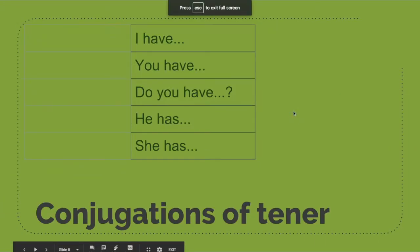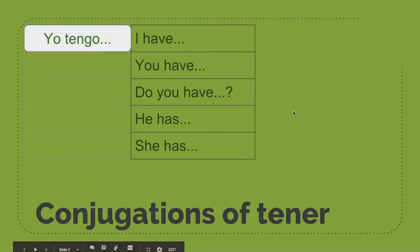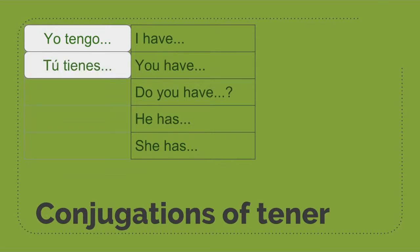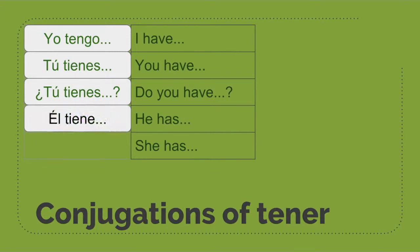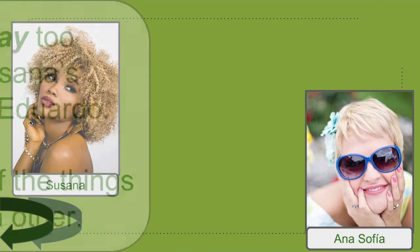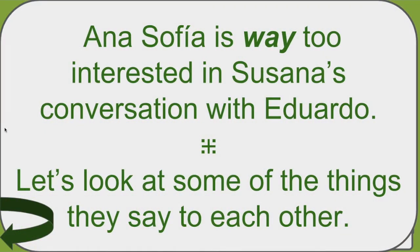So we said I have is yo tengo, you have is tú tienes, do you have is tú tienes, and he has is él tiene. In this conversation, Ana Sofía is way too interested in her friend Susana's recent conversation with Eduardo. Let's see what these ladies say to each other.